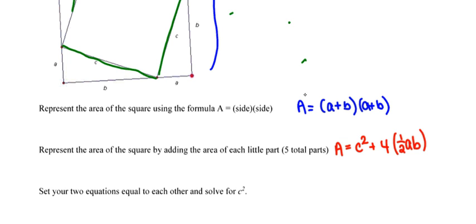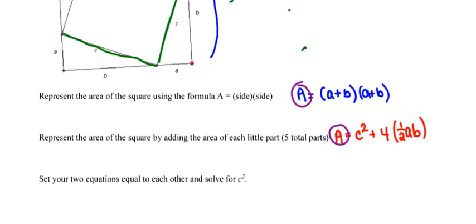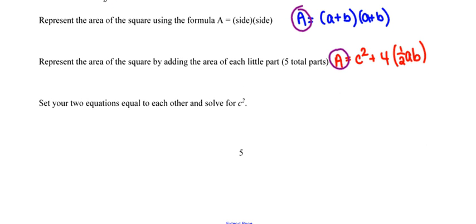And at this point, we now have two equations, both of which are equal to A. So we can do a little bit of substitution here and set them equal to one another. So we've got A plus B times A plus B that is equal to C squared plus four times the half A times B.